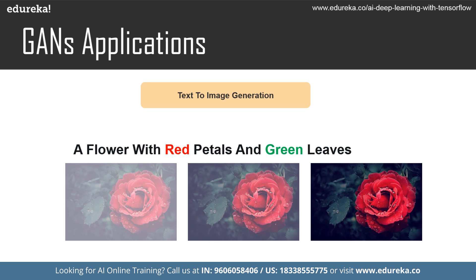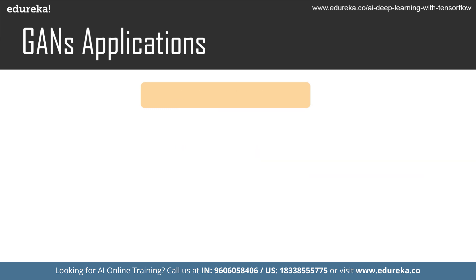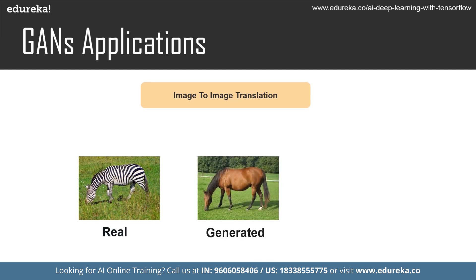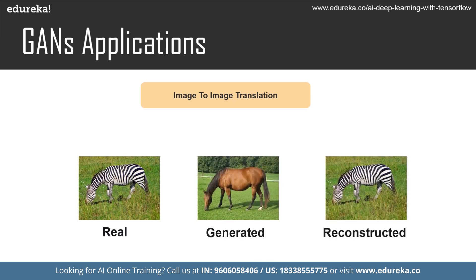The third application is image-to-image translation. Pix2Pix is a model designed for general-purpose image-to-image translation. Given a real image, it generates a fake translated image and can reconstruct back to the original. This is the core of image-to-image translation work with GANs.